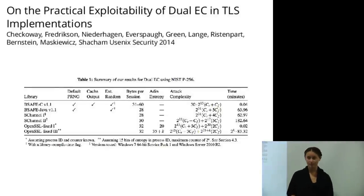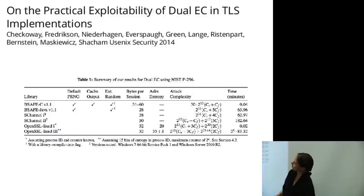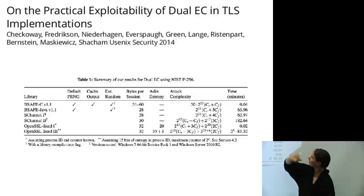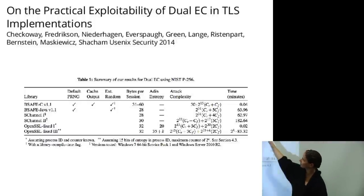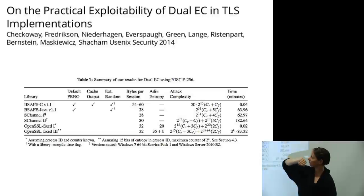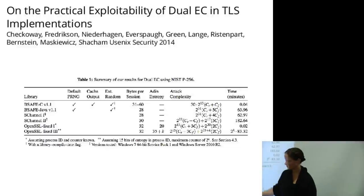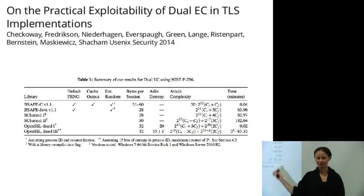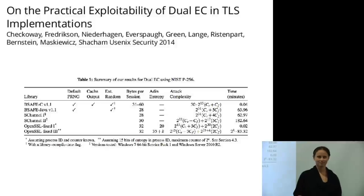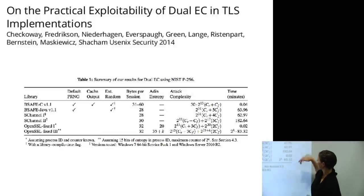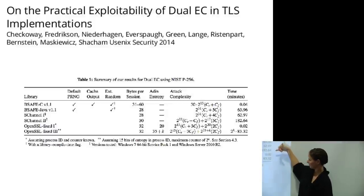There was an interesting paper at USENIX Security this year by a large number of authors — including Steve Checkoway, Matt Green, Tanya Lange, Tom Ristenpart, Dan Bernstein, Hovav Shacham, and their students — where they actually implemented this attack against some crypto libraries containing implementations of the Dual EC DRBG, and looked at how difficult it was to break the crypto. The result is that depending on the implementation, it takes either a tiny number of seconds, a medium number of seconds, or a not-insignificant number of seconds.